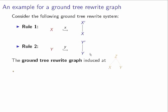Let's look at this tree as the initial state: Z with two children X and Y. From this initial state, what is the infinite graph induced by those two rules? You can apply the first rule, so you go to new states. The new state has Z at the root, with the left child expanded to X'(X) and Y untouched.